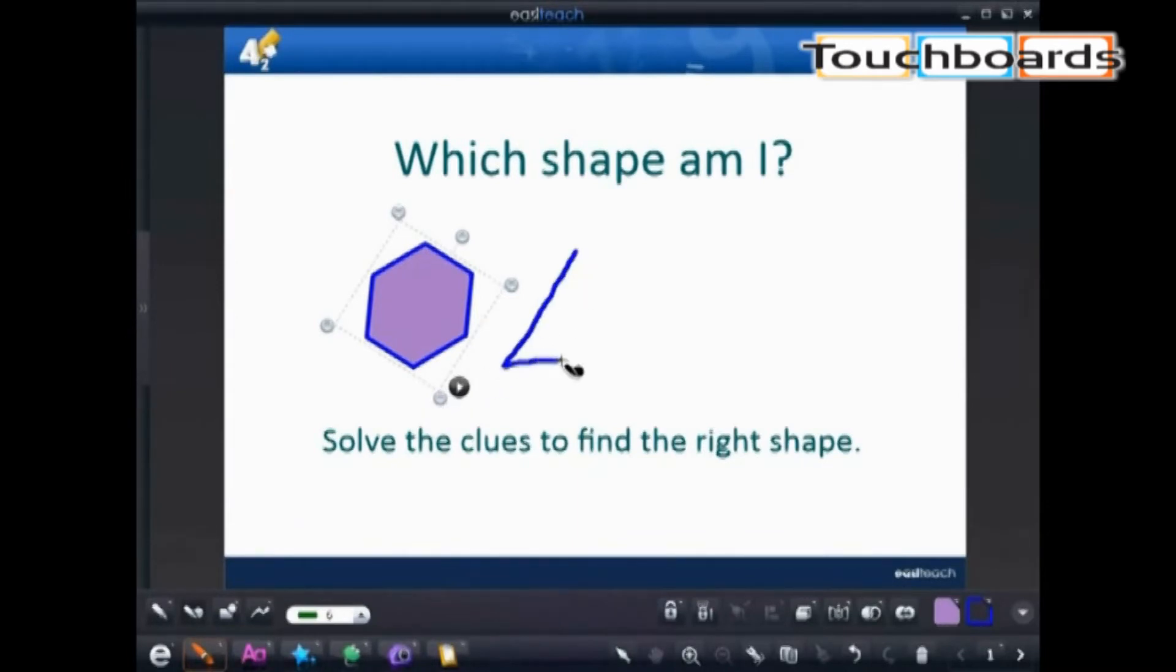Using the shape recognition tool, we can drag out and create that perfect shape every time. Drawing a perfect triangle, it will snap into place.